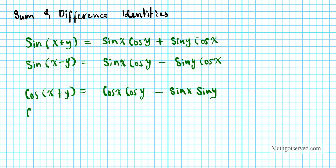So what about cosine x minus y? Remember the rule for cosine: the trig functions stay the same starting with cosine. So we have cosine x and cosine y, but the sign switches. So this becomes cosine x cosine y plus sine x sine y. Having these formulas memorized will greatly aid you in a lot of these problems.